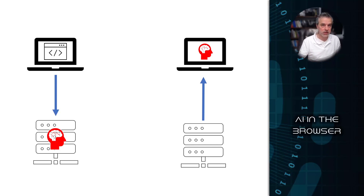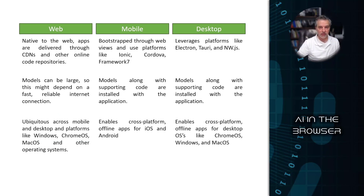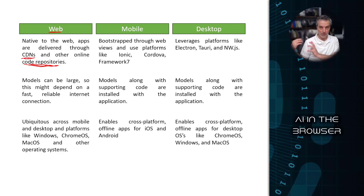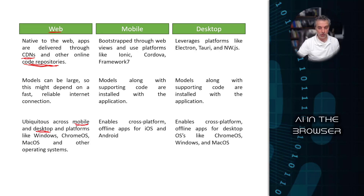The most obvious use case is the web, where you access a web page via URL that downloads content from a CDN or online code repository. The real advantage is getting the AI model close to the user, delivered the way a web page typically is — ubiquitous across pretty much everything with a screen and sufficient processing power. This covers mobile and desktop, delivered through a browser already installed on the device: Windows, Chrome OS, Mac OS, iOS, Android, and so on.